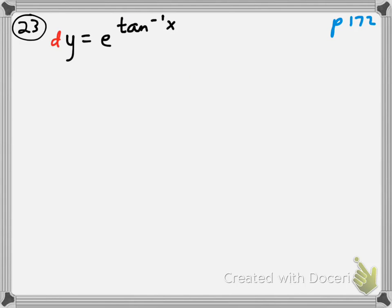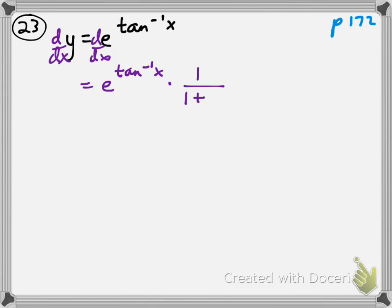The derivative of y with respect to x equals the derivative of this expression with respect to x. Remember, the derivative of e to the anything is e to the anything, and if that anything is something that's not just x, then we have to multiply by the derivative of it, which is 1 over 1 plus x squared.